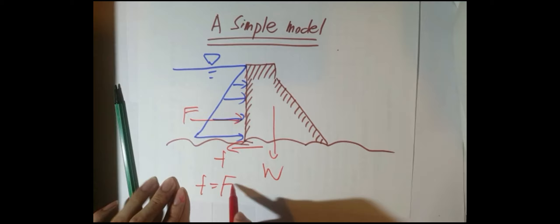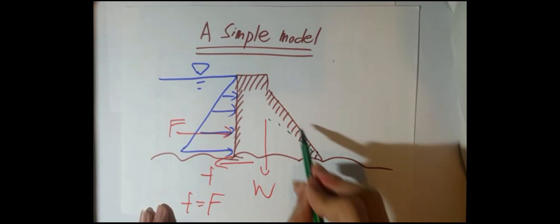One type of dam is the gravity dam. It uses its own weight to oppose the hydrostatic force. A large contact surface area and weight will create strong friction at the foundation, which can balance the force acting on the dam. The weight will also balance out all moments.